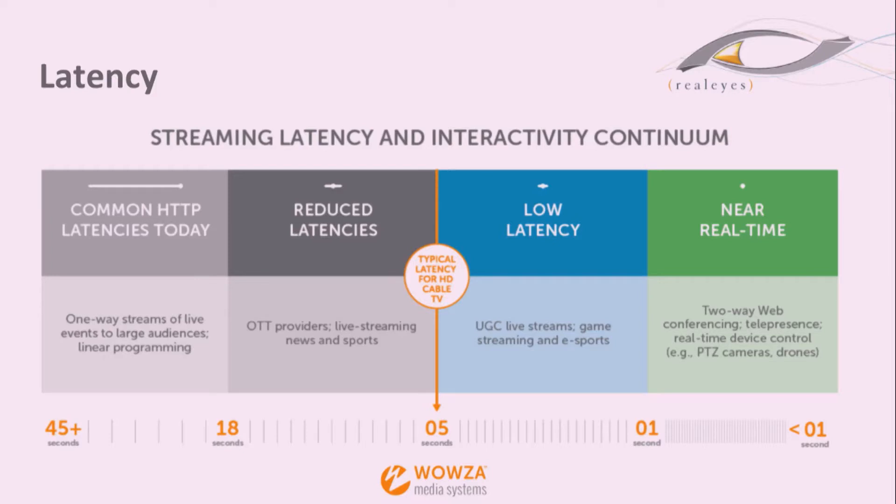When we look at normal streaming today, which is HTTP-based — so HLS primarily, and Dash, throw it in there too, because I wish Dash was even more prevalent than it is — HLS being the primary one we work with all the time. Normal delivery, normal latency, is 30 to 45 seconds plus. That's if you're doing a pretty good job, you're going to see around that type of latency.